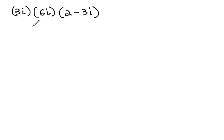So first, multiplying 3 times 6, we get 18. i times i is i squared, times the 2 minus 3i.